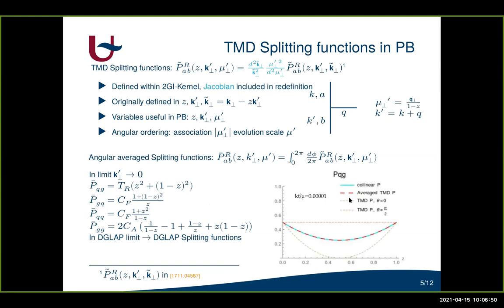Here I show the gluon-to-quark splitting function versus z, where the blue curve is the collinear splitting function and the other three curves are the TMD splitting function at a very small value of incoming transverse momentum. The red dashed line is the angularly averaged TMD splitting function and we see that it coincides with the collinear splitting function, but already at a very low incoming transverse momentum there can be an angular dependence as shown by the two other curves.